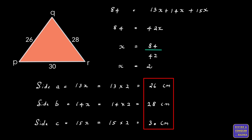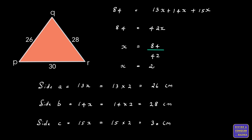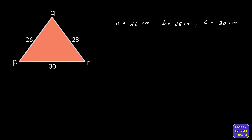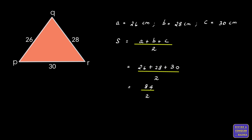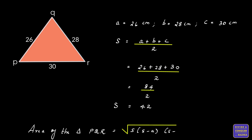Now we need to calculate the area. Using the semi-perimeter formula, s = (a + b + c) ÷ 2 = (26 + 28 + 30) ÷ 2 = 84 ÷ 2, so the semi-perimeter s = 42.